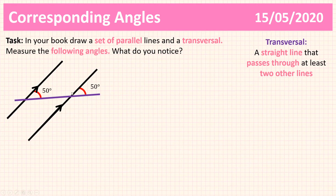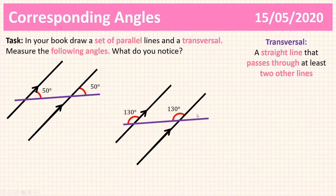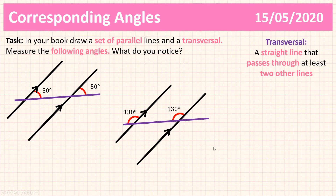Just to show you the other angles you could have measured — for example, once again I've got two angles on the same side of the transversal, one interior to the parallel lines and one exterior. And I've got 130 and 130. So compare your diagram to mine — what's the same, what's different, what do you notice?